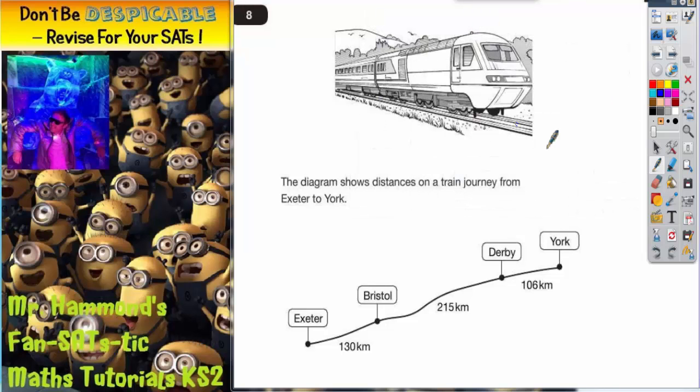Question 8. We've got a picture of a train. It says the diagram shows distances on a train journey from Exeter to York.